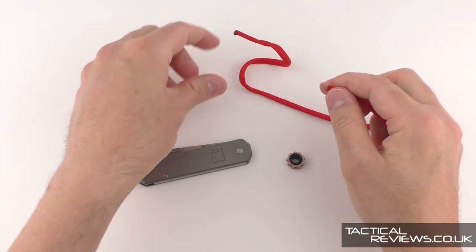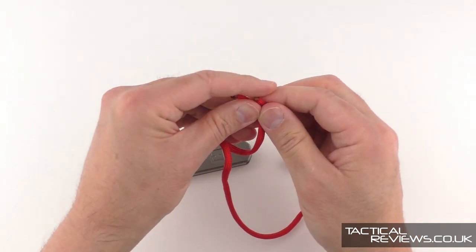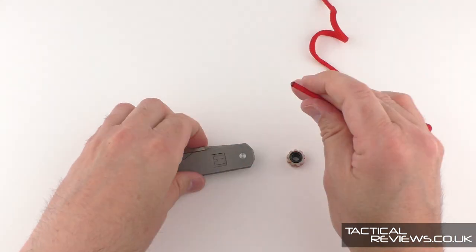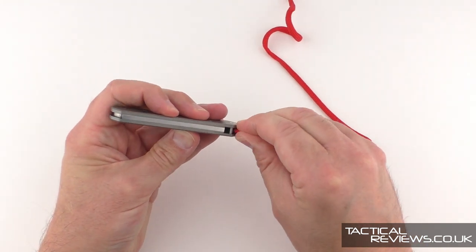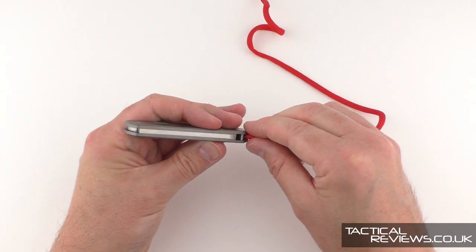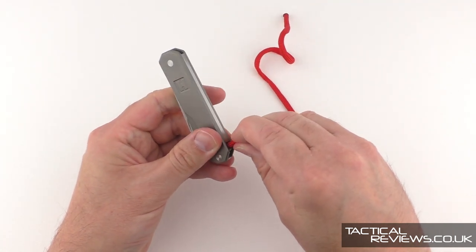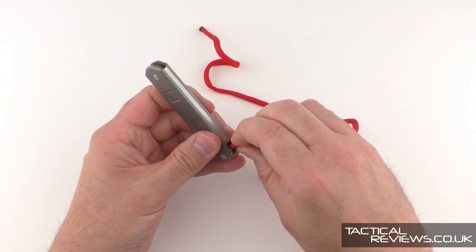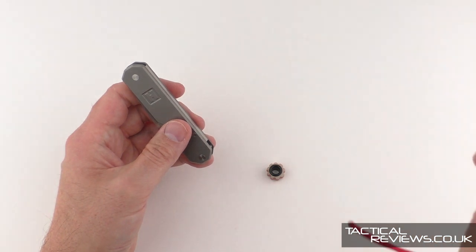Now, of course, with paracord, we have melted ends to stop it fraying and coming apart. And that might prove to be a little bit difficult to get through. And it's bigger than that hole. So I'm just going to set that aside.